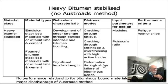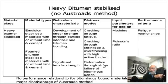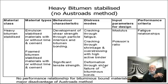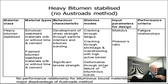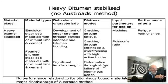Heavy bitumen stabilised materials — these can be emulsion and cement. Emulsion cement is one I'm using with a pretty good deal of success, and foam bitumen with or without lime or cement. There is a little bit of difference in performance with or without lime or cement. Cement will give it high early strength — much higher early strength — as will a high proportion of lime, but it increases the risk of block cracking further down the track.